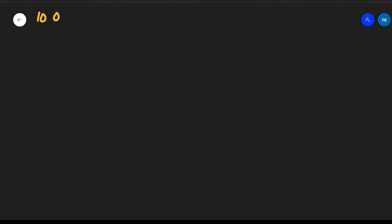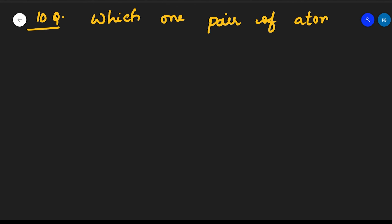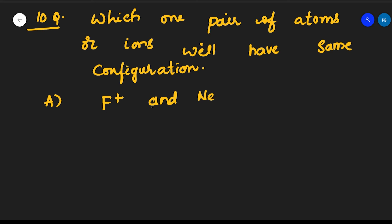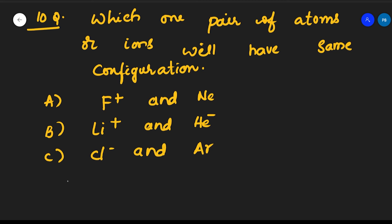The tenth question: which pair of atoms or ions will have the same electronic configuration? Options: A) F⁺ and Ne, B) Li⁺ and He⁻, C) Cl⁻ and Ar, D) Na and K. Let's evaluate each option by counting electrons.